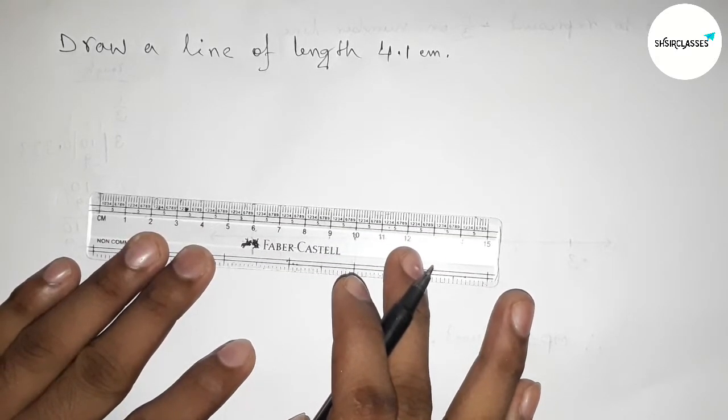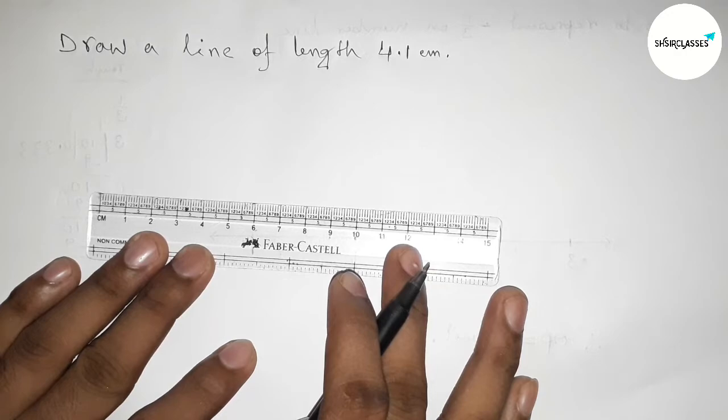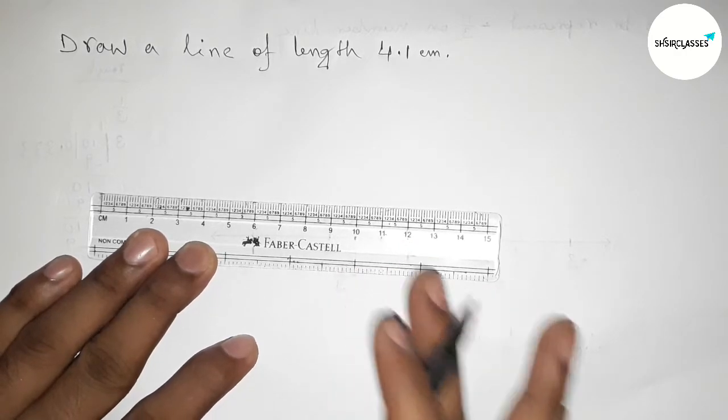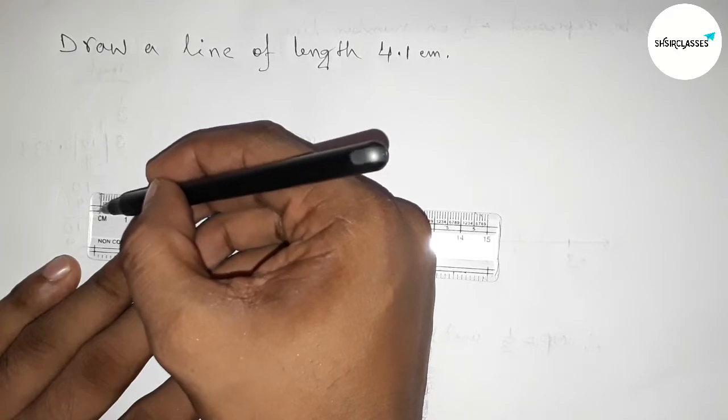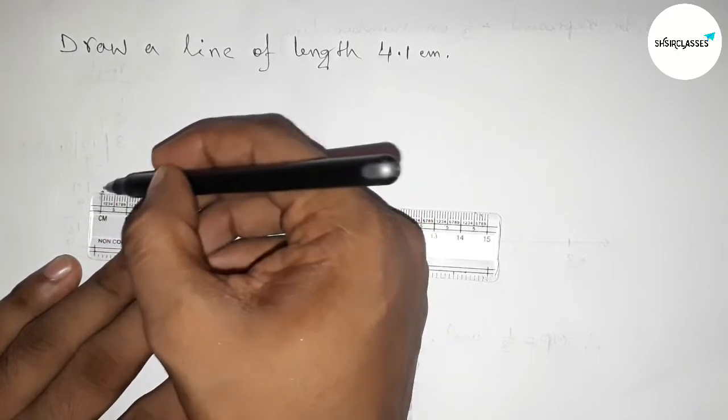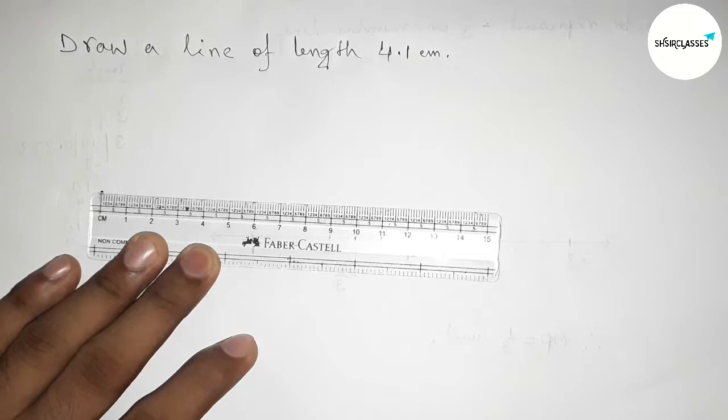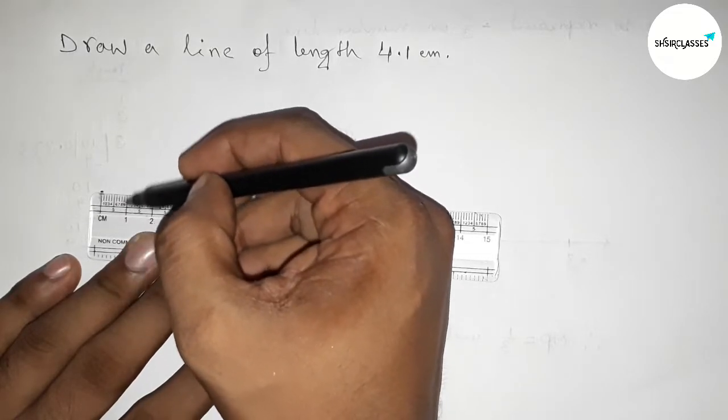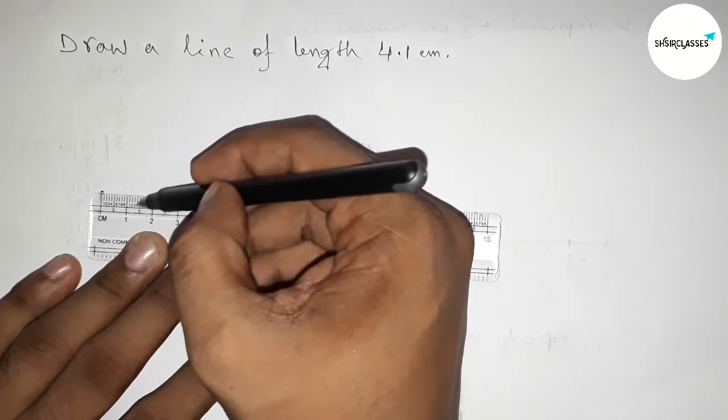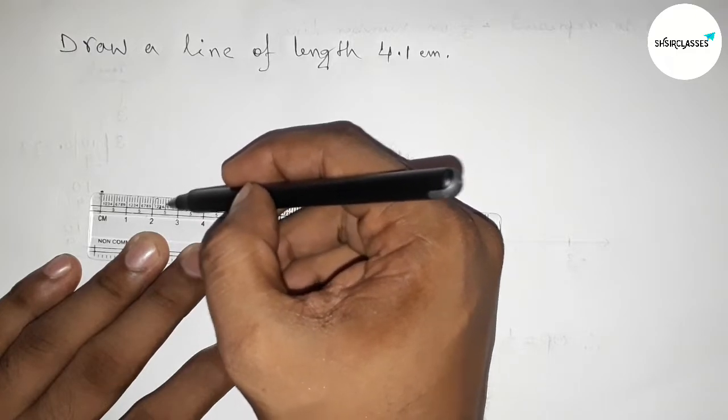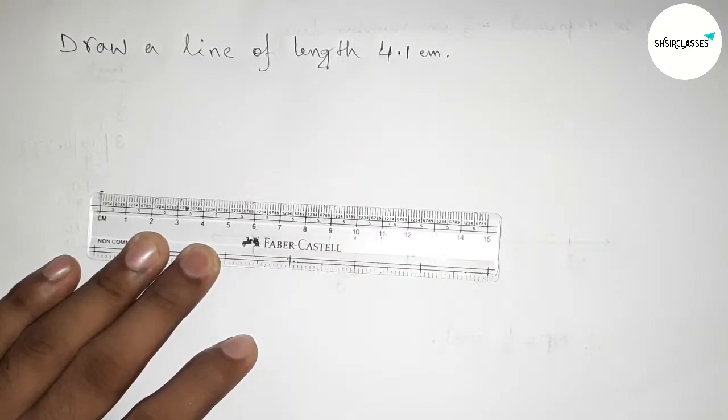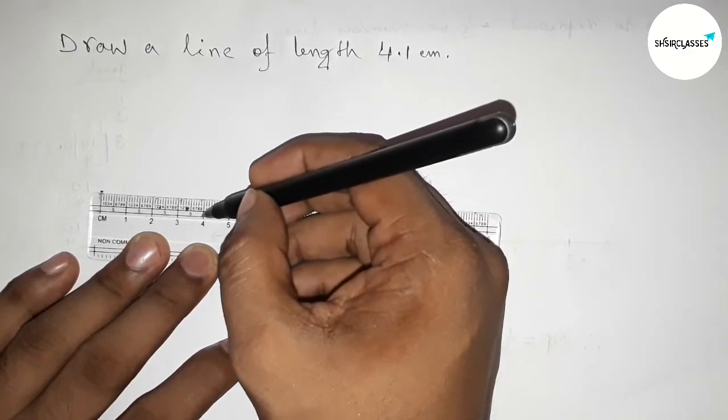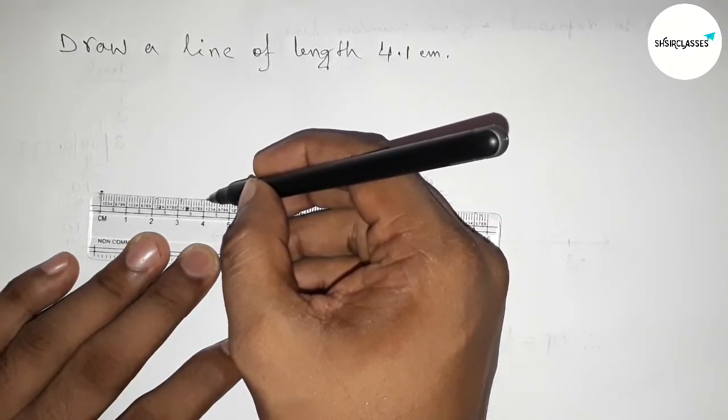So first, putting the scale by this way and now counting the length 4.1 centimeters. So this is starting zero, so first marking here zero. Now counting, so this is one centimeter, this is two centimeters, this is three centimeters, this is four centimeters, and we have to count 4.1. So this is four and this is 4.1.